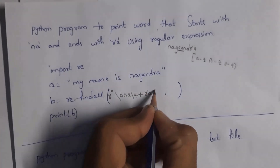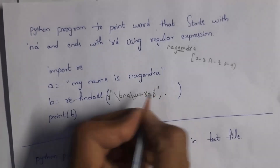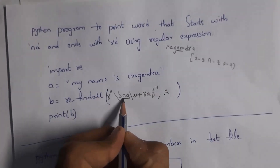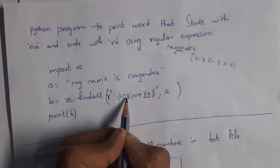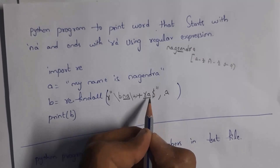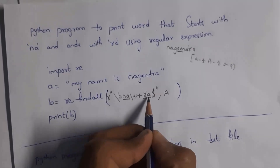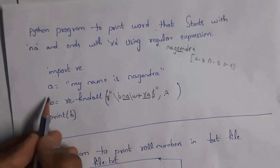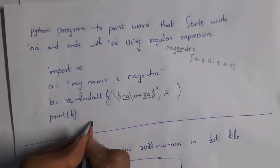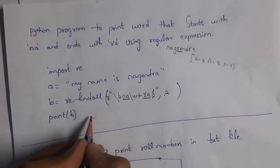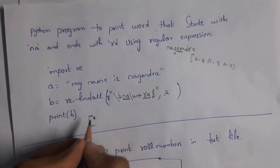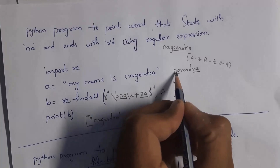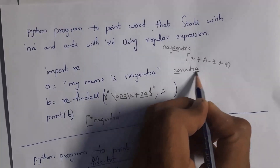Close the quotation marks and pass variable a as the string. The meaning of this pattern: \b identifies the first characters 'na', dollar sign identifies the last characters 'ra', and \w+ matches any characters in between. Print b will output 'nagendra' as a list. If the string also had 'narendra' — which starts with 'na' and ends with 'ra' — it would be printed too.